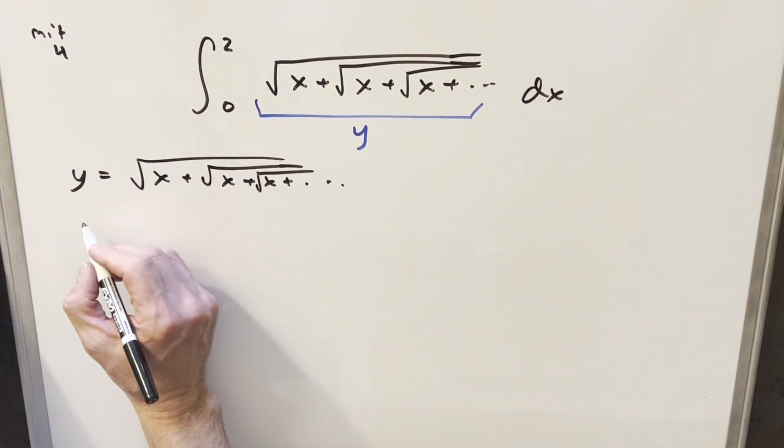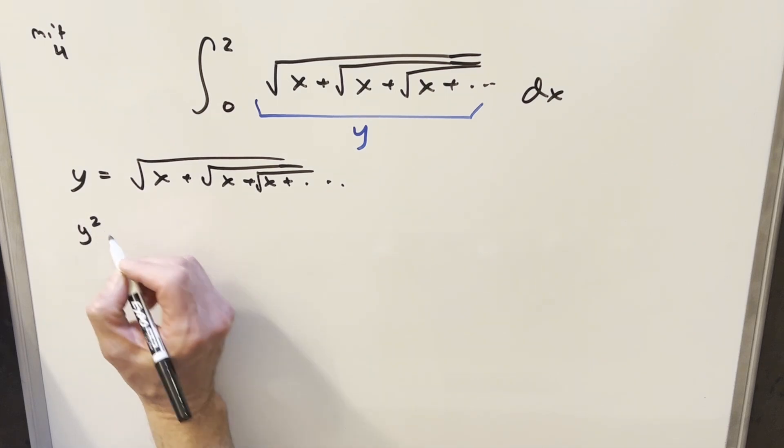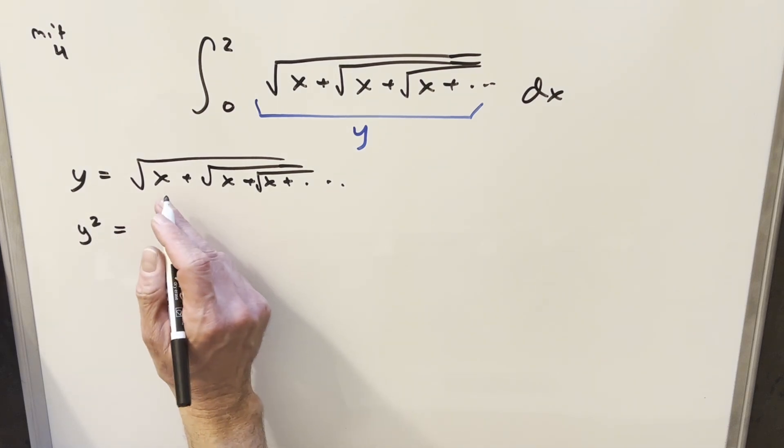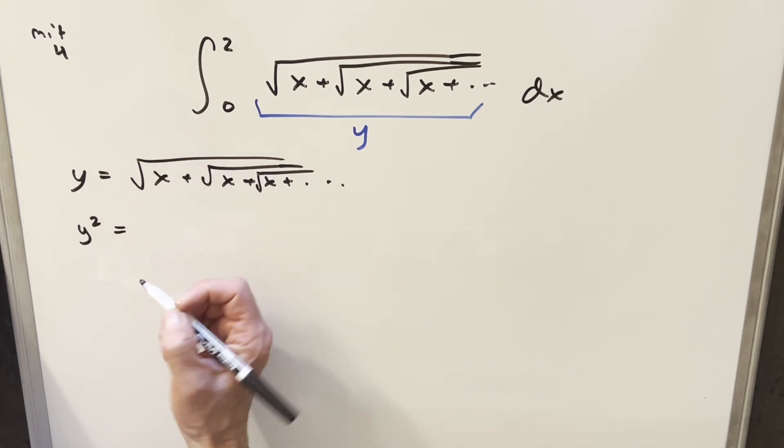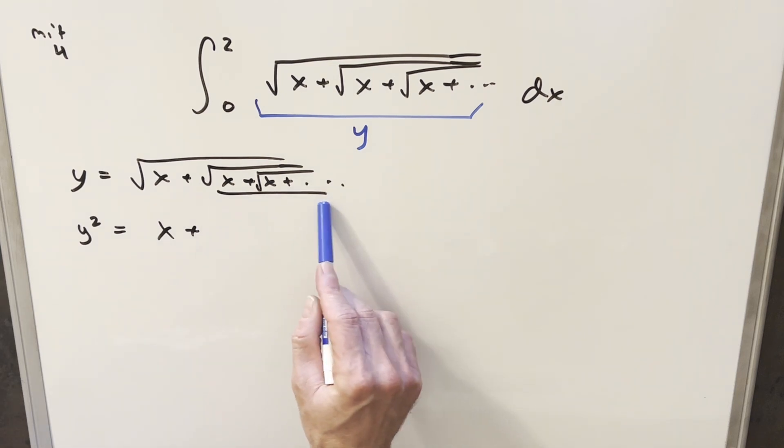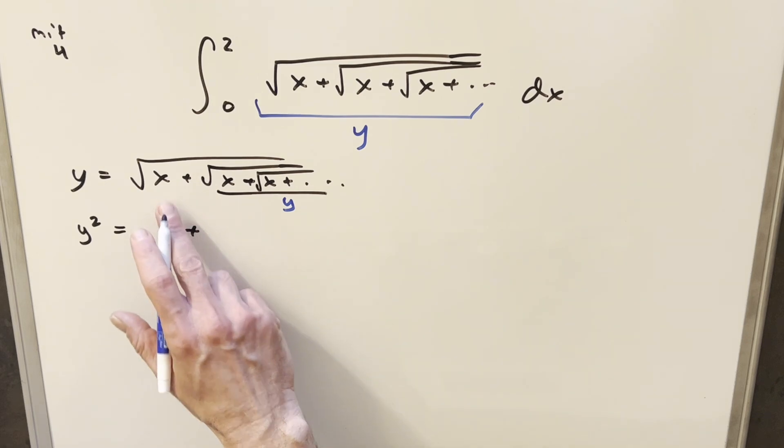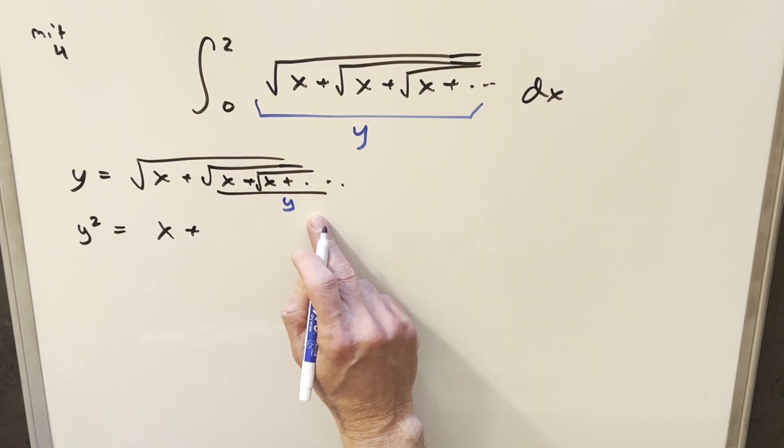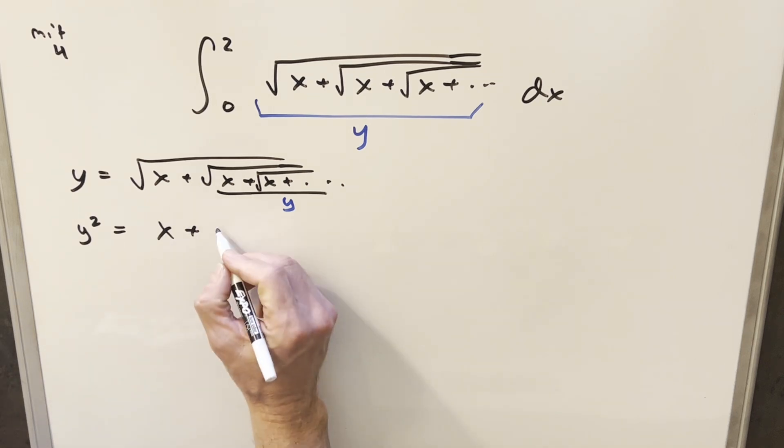If I square both sides, on the left side we'll have y squared, then this removes the outer radical. So we end up with x plus this whole thing here. But the thing to notice, because this is an infinite expression, this piece right here, even after squaring it and removing one term, is still infinite. So this is actually the same thing as our original integral y. We can just write this in here as y.